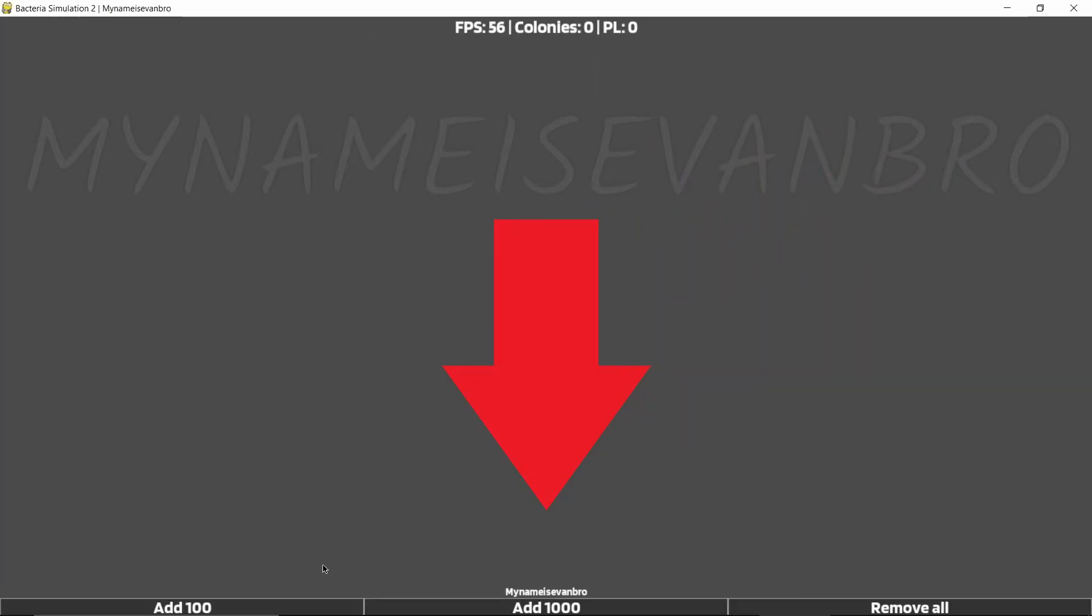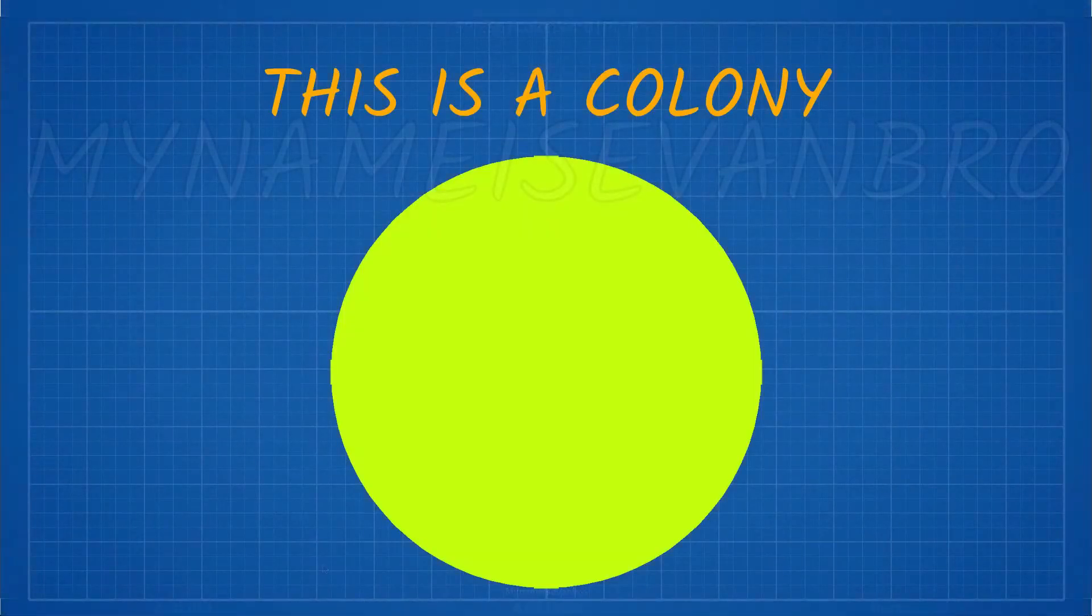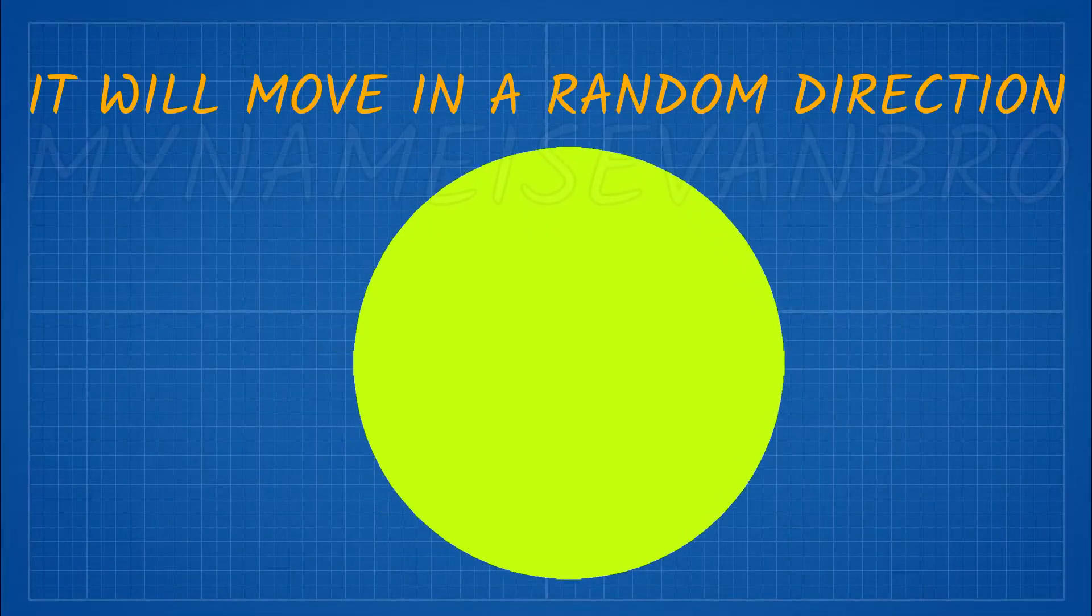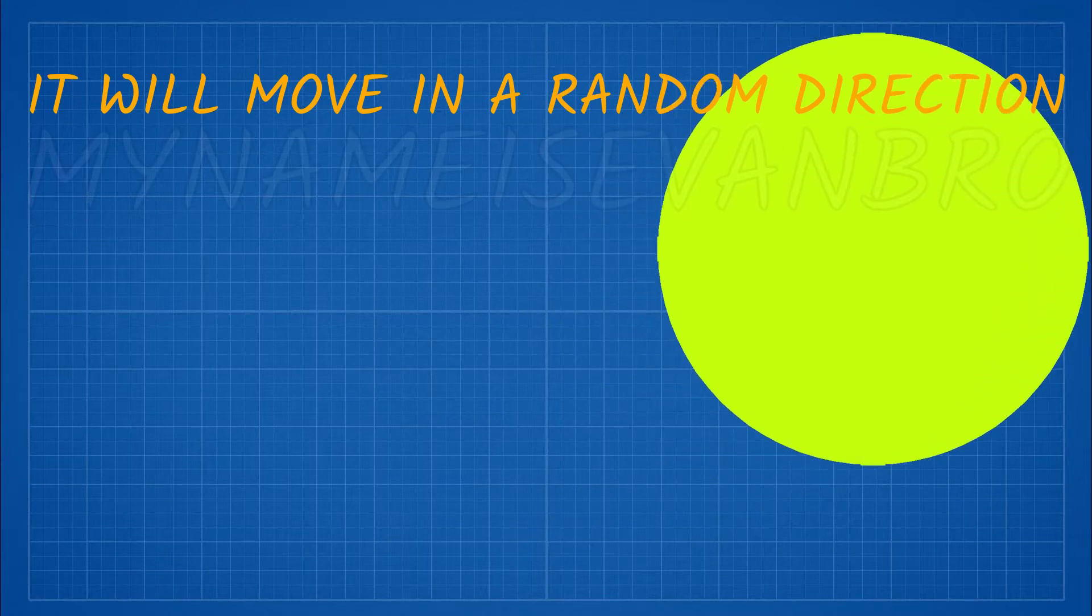Before I start the simulation, here are some rules. A colony is in the shape of a circle and will move at a constant speed at a random angle from 0 to 360.